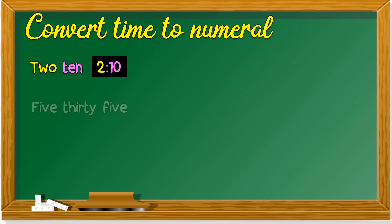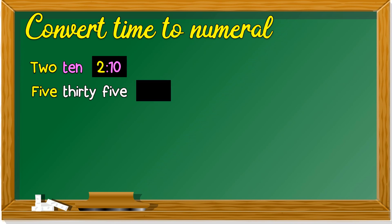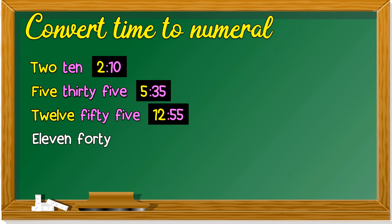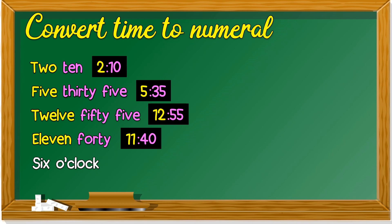Let's try a few more questions. 'Five thirty-five' — the hour is 5, the minute is 35. 'Twelve fifty-five' — the hour is 12, the minute is 55. 'Eleven forty' — 11 is the hour, 40 is the minute. Next: '6 o'clock' — o'clock means both digits behind are 00. So this is how you write 6 o'clock in numbers: 6:00.